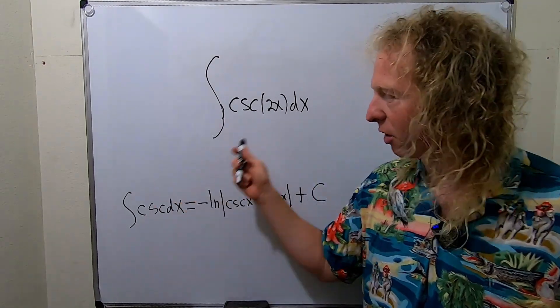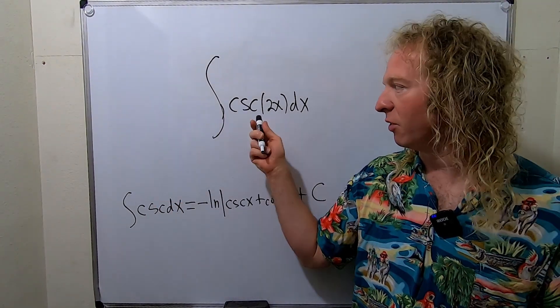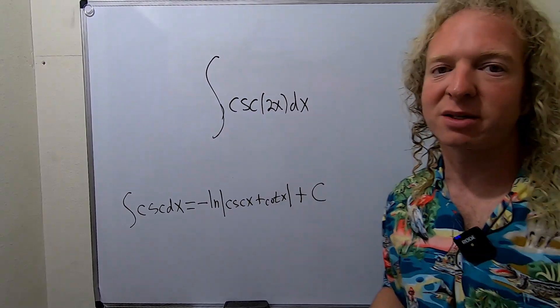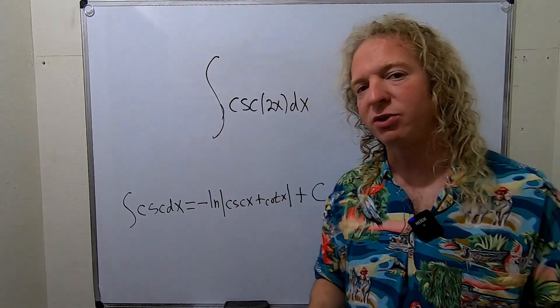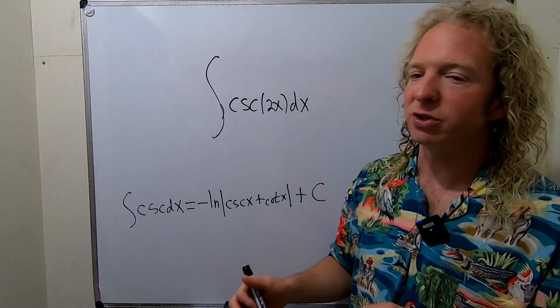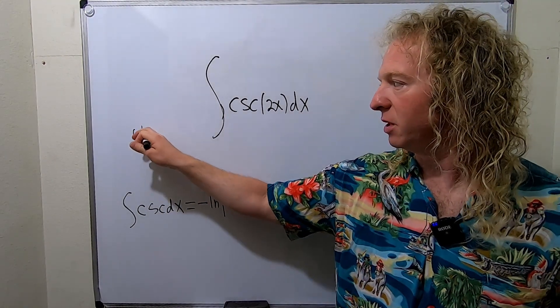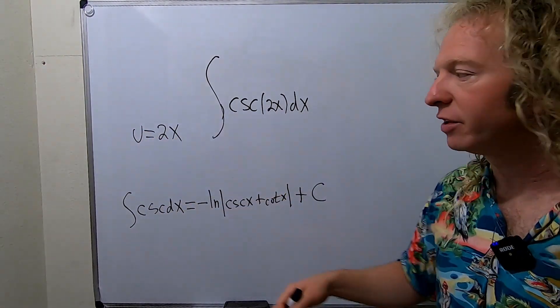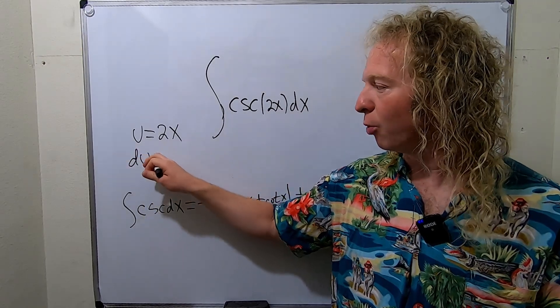Okay, so this is almost what we have, right? We almost have this. The only thing we have here that's extra is the 2x. So what we're going to do is we're going to make a u substitution. So we're going to let u be equal to 2x.